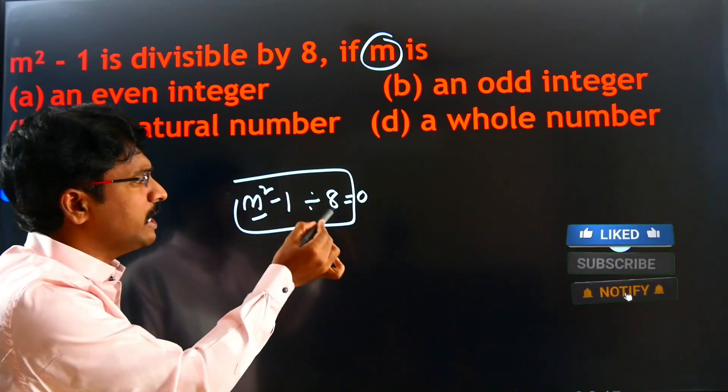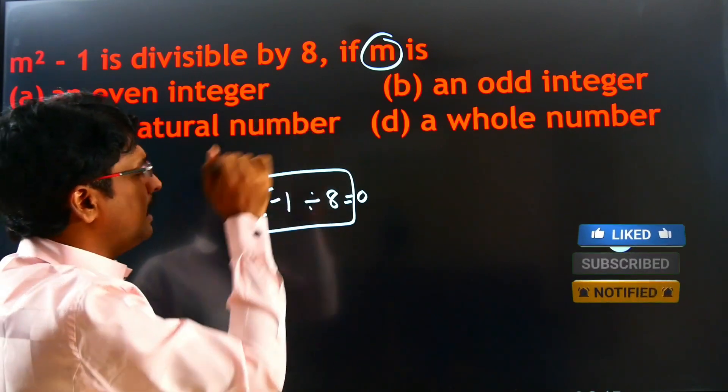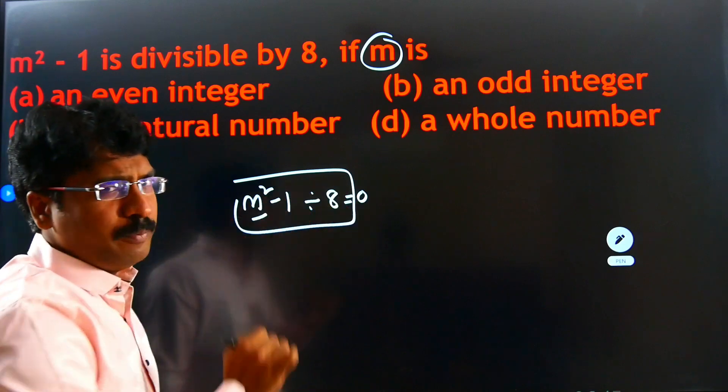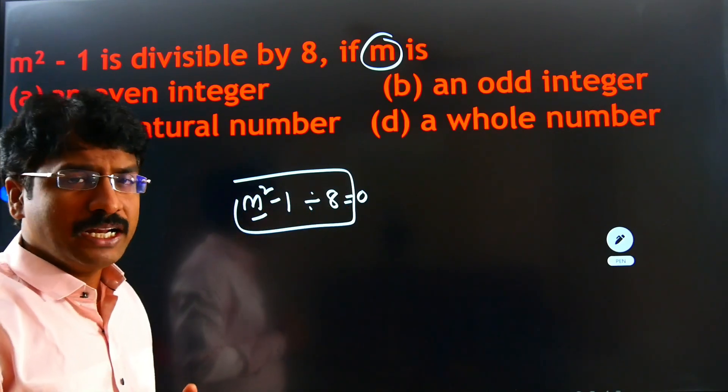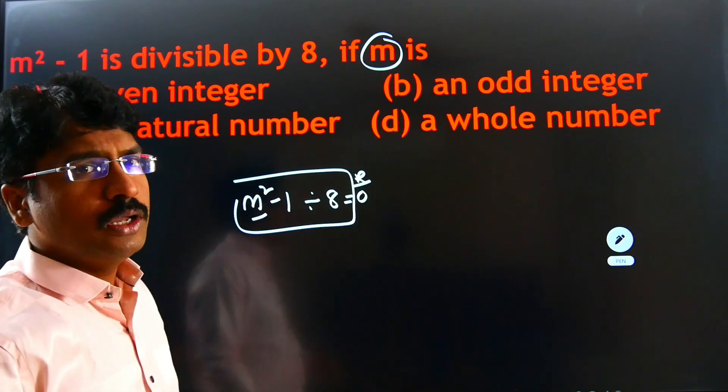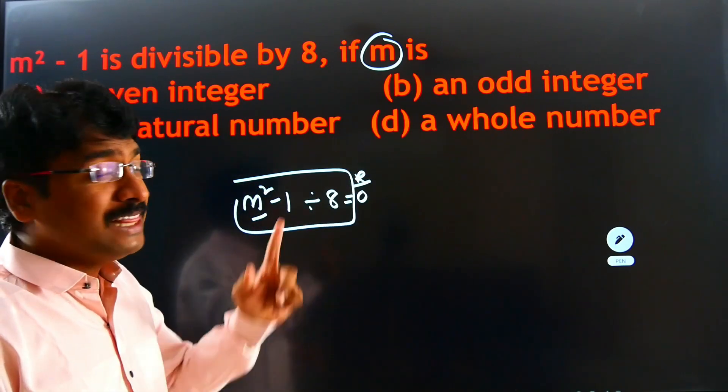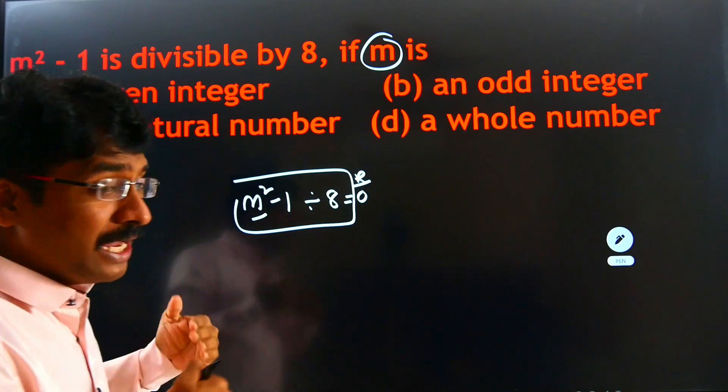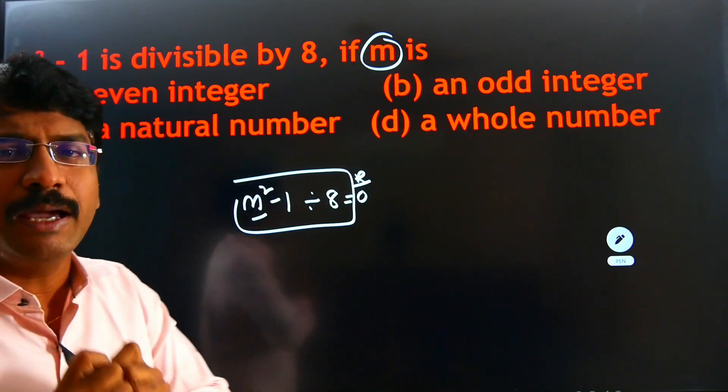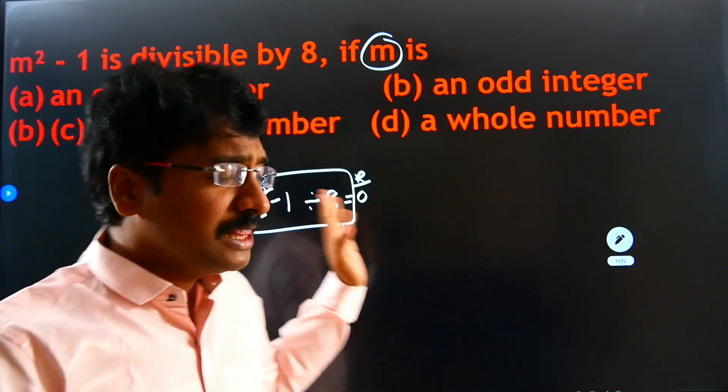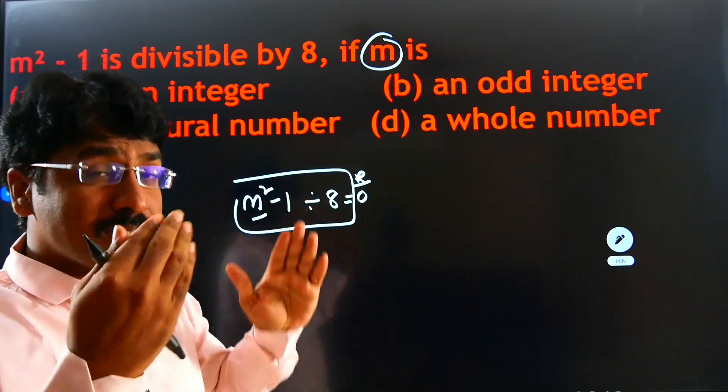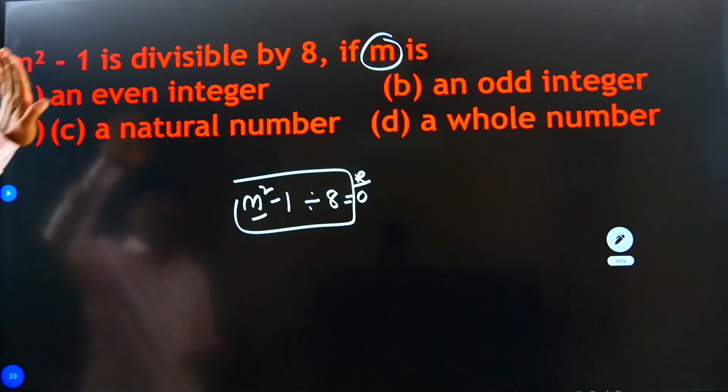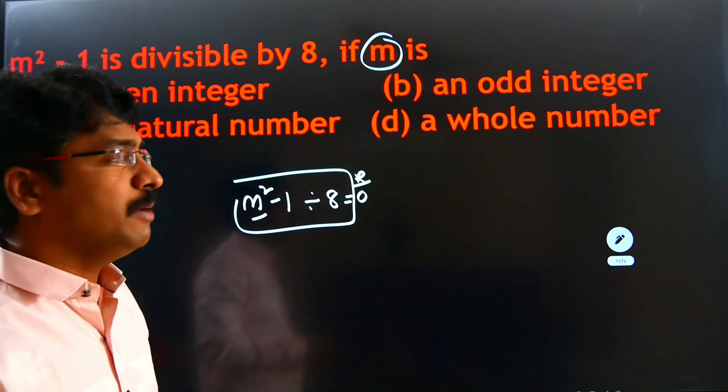M square minus 1 divided by 8. Divisible by 8 means if remainder is 0, conform to the number. Because the number is also divisible by 8, the remainder will be 0. So, exactly divisible by 8. If you look at options here, they did not give the exact numbers. They mentioned the words. What is the word sentences? An even number.